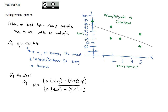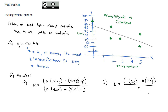Once we have m, the slope, we can find b, the y-intercept. b is the sum of the y's minus m times the sum of the x's, all divided by the sample size. So let's hop over to Excel and actually find the values for m and b, and ultimately build the line of best fit for this data.